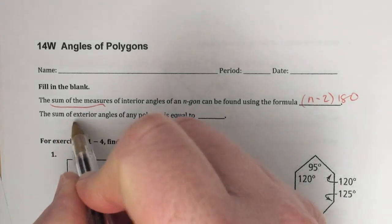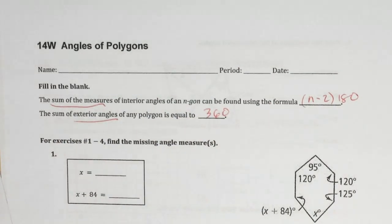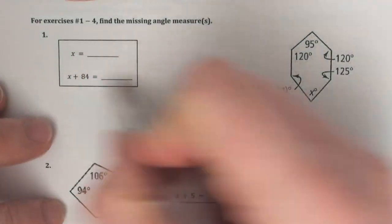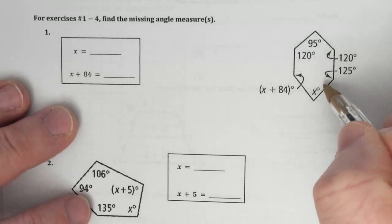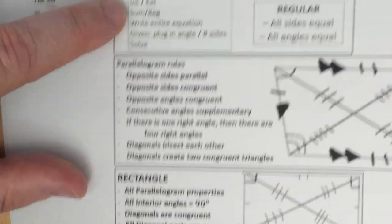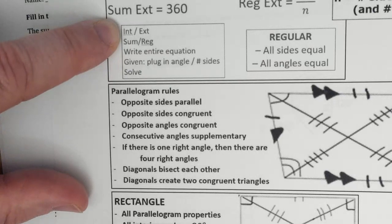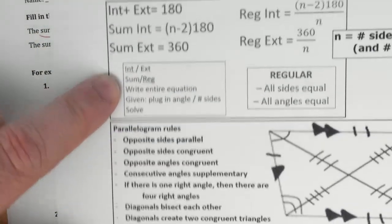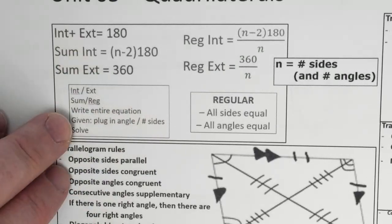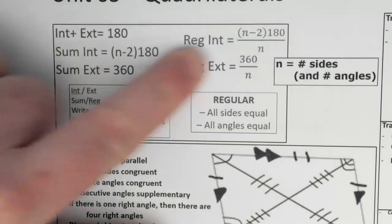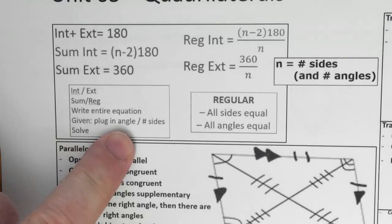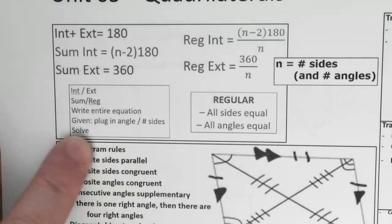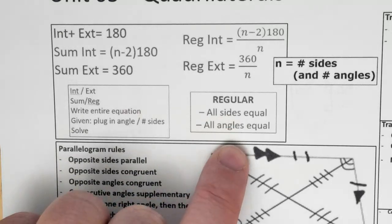The sum of the exterior angles is just 360. Now, you ask yourself: are we talking about interior or exterior angles? Are they the sum, or regular — where regular means all the same sides and all the same angles? Then you write down whichever equation you're using, plug in either the angle or the number of sides, and solve. Regular means all the sides are equal and all the angles are equal.